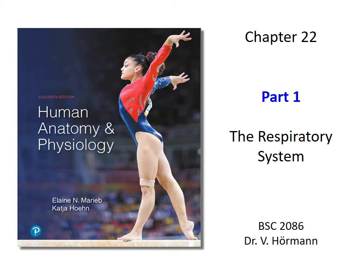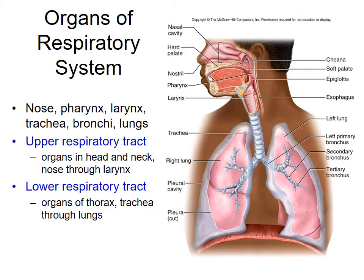Welcome back ladies and gents — this is Chapter 22, the respiratory system part one. In this chapter we're going to explore all the different organs and structures that contribute to our respiratory system, what controls when the lungs inflate and deflate, the role of alveoli and gas exchange, and whether oxygen, carbon dioxide, and pH influence our respiratory rates. We'll also discuss how breathing can be controlled both on a conscious and an unconscious level.